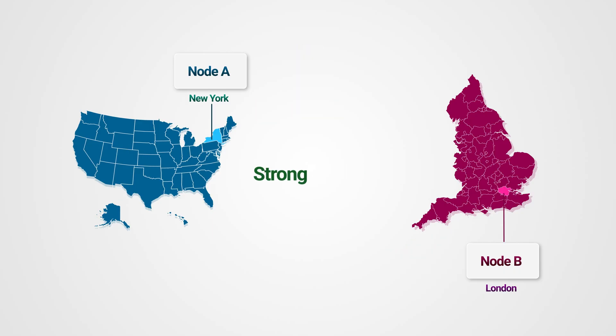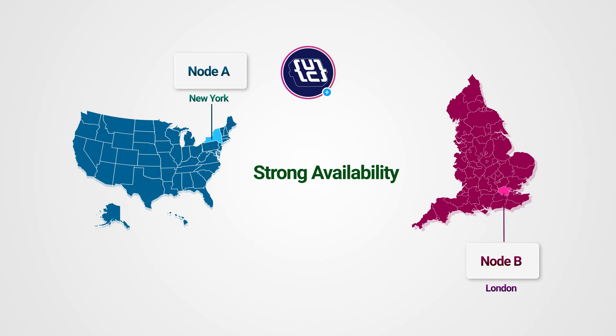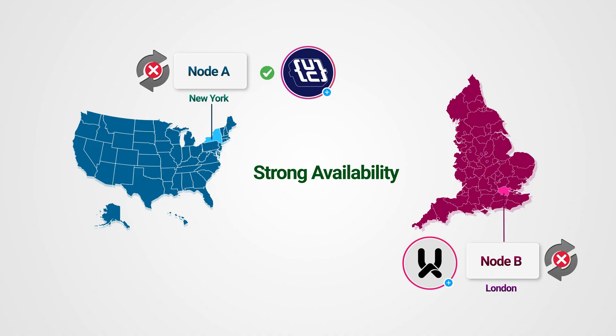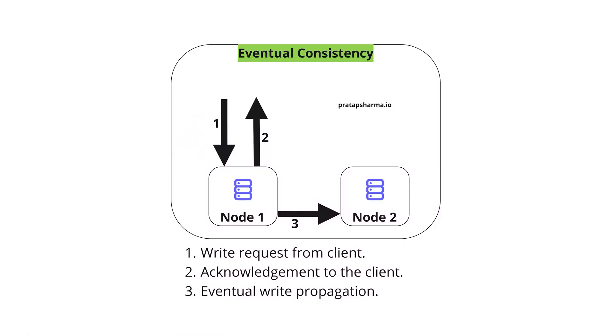If you prioritize availability, both nodes will keep accepting requests even during a partition. Your profile picture update goes to Node A and Node A says, 'Got it, update complete,' even though it can't sync with Node B yet. This means Node A has your new profile picture but Node B still has the old one. Your friend checking from London might see your old profile picture while you see the new one from New York. The system is available and responding to requests, but it's temporarily inconsistent. Eventually, when the network partition heals, the nodes sync up and everyone sees the same data. This is called eventual consistency, because the data eventually becomes consistent across all nodes.